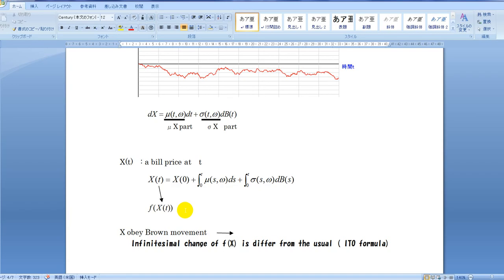At the integration of f(X), the peculiarity of the Brown movement causes the appearance of unusual term. That is what is called the Ito's formula.